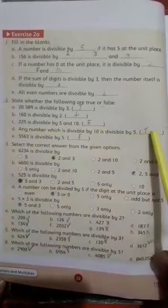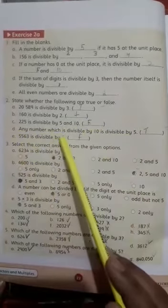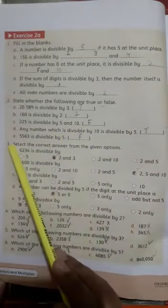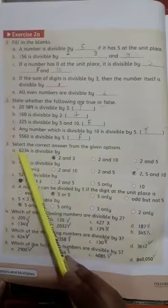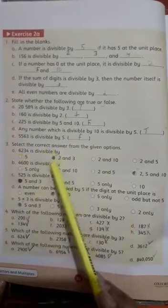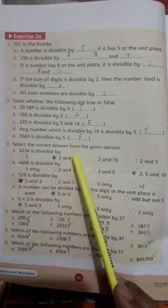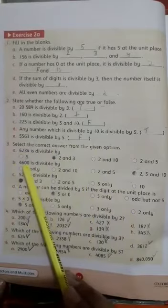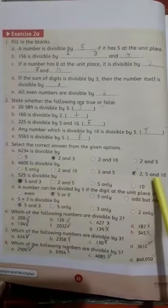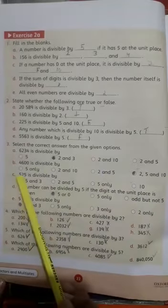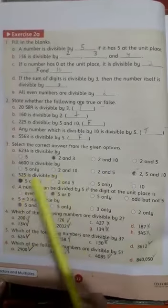E: 563 is divisible by 5 - false. Question 3: Select the correct answer from the given options. A: 6234 is divisible by - answer is B, 2 and 3. B: 4600 is divisible by - the answer is D, 2, 5, and 10.